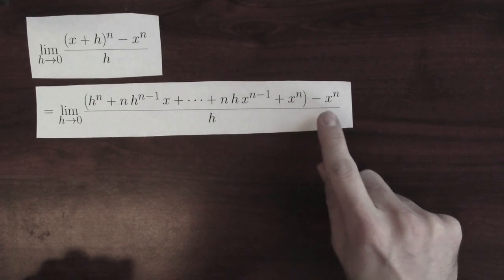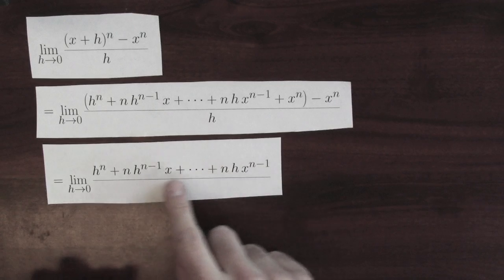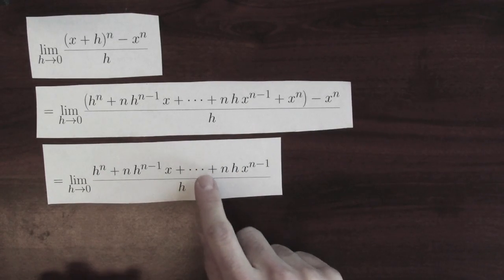Just like before, I've got an x to the n and a minus x to the n. So I can cancel those. And now I'm left with just these terms, still a bunch of terms with h's in them.